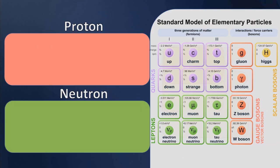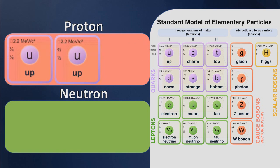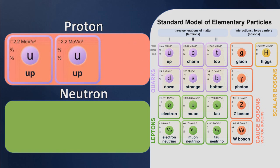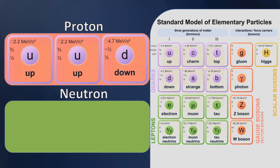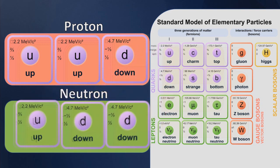Protons and neutrons are actually made of even smaller particles called quarks. These quarks combine in groups of three to form either a proton or a neutron. When we have two up quarks and one down quark, we have a proton. But when we have two down quarks and one up quark, we have a neutron.